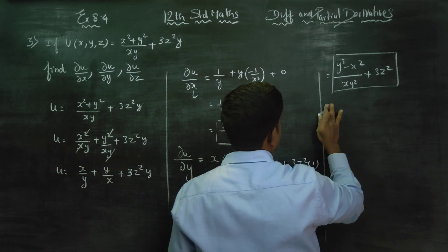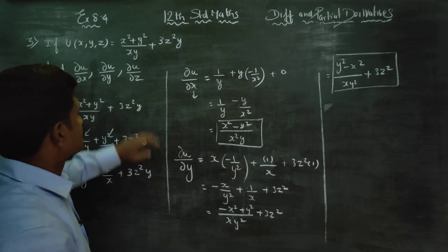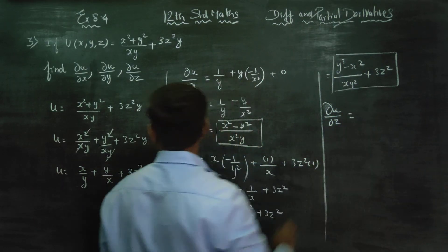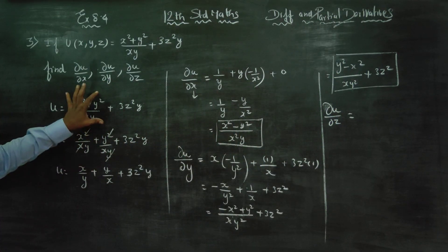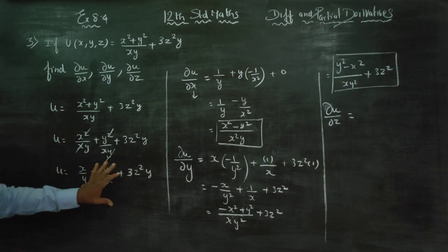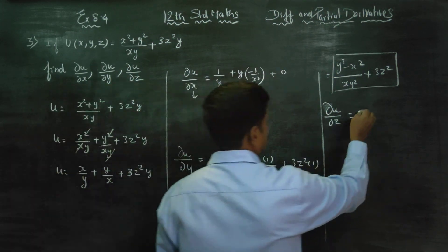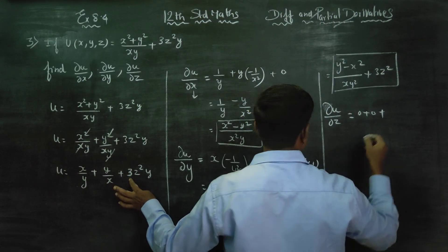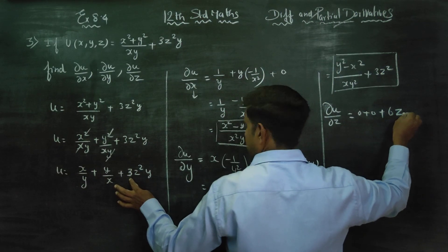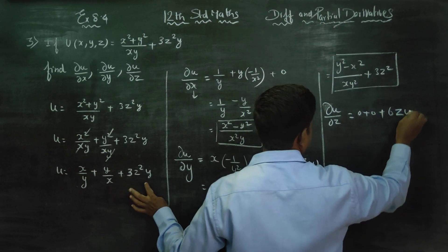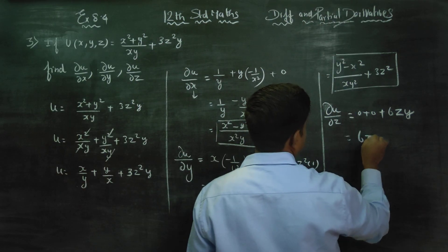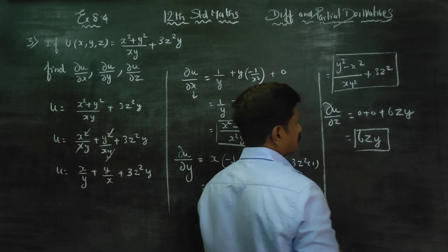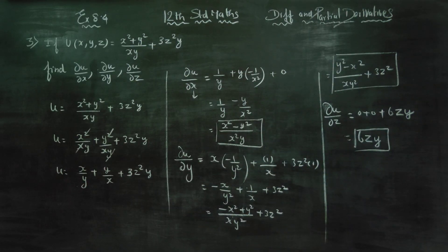Third one, that is ∂u/∂z. Here x is not, y is not, z is not. 0 plus 0 plus 3 times 2z equals 6z. The y remains. Therefore your final answer will be 6yz or 6zy.